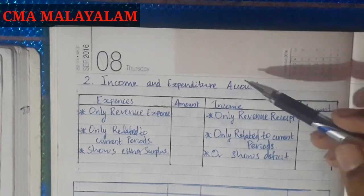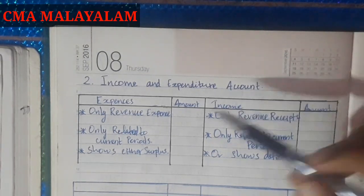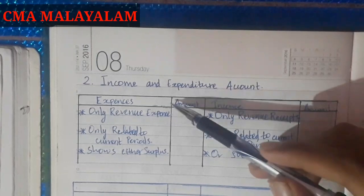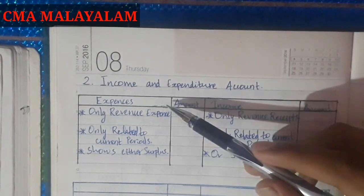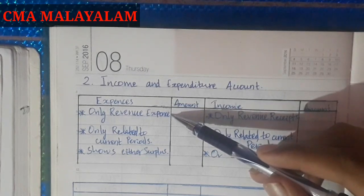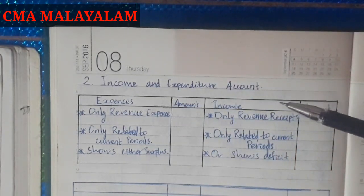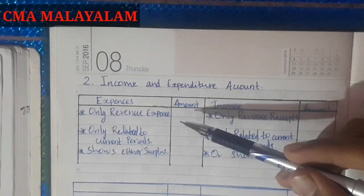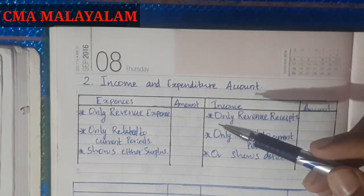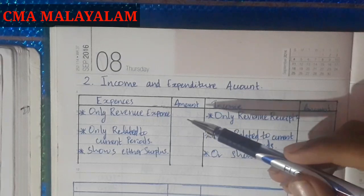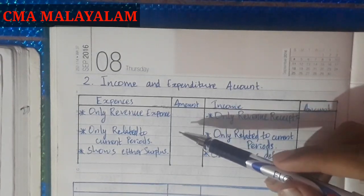Now, let's look at the format. On the debit side of the Income and Expenditure account, we can use expenses. For the expenses, we can use only revenue expenses — not capital expenditure. For example, a fixed asset is capital expenditure, so we don't need to worry about that.